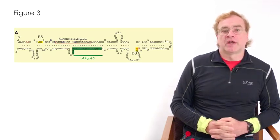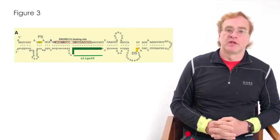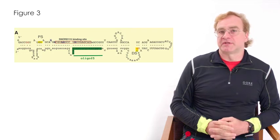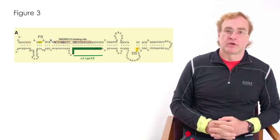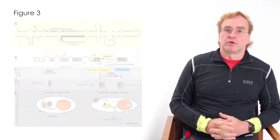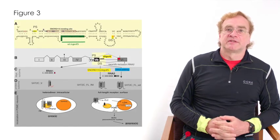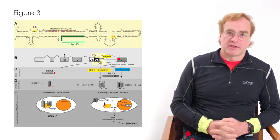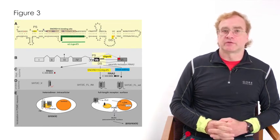In addition to SNORD115, the formation of the full-length receptor can be promoted by RNA editing that changes five adenosine residues that also weaken the double-stranded structures. So SNORD115, in essence, changes the equilibrium between a truncated isoform and a full-length isoform.